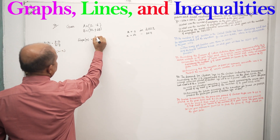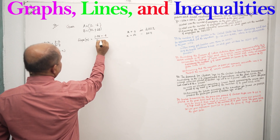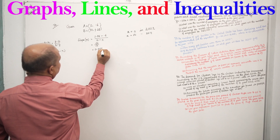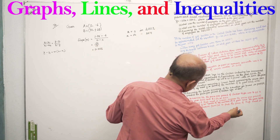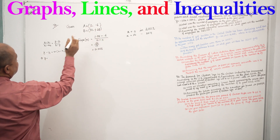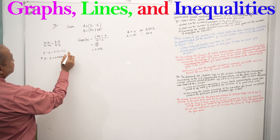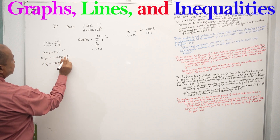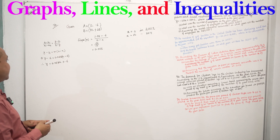The slope is 0.065. For requirement A, we write a linear equation since 2002. Using point-slope form: Y minus Y1 equals M times x minus x1. Y1 equals 0.6, M equals 0.065, x1 equals 0. So Y equals 0.065x plus 0.6. This is our linear equation.